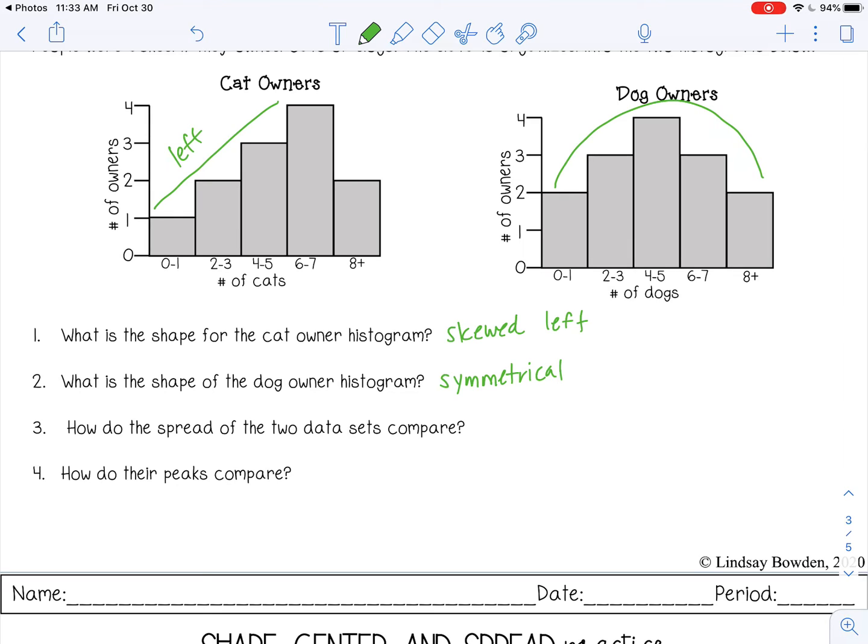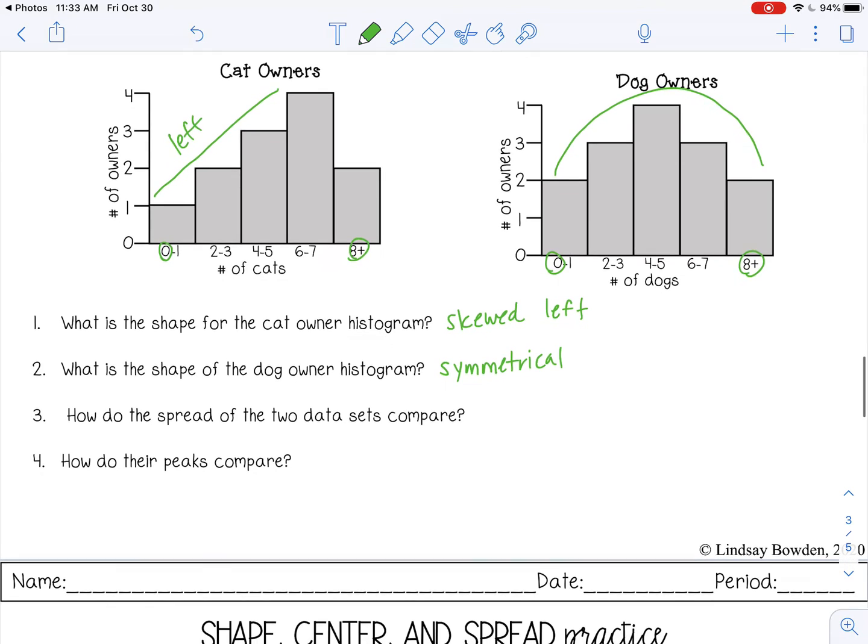All right, how did the spread of the two data sets compare? So for the cat owners are going from zero to more than eight, and then from dog owners, zero more than eight. So they're about the same.